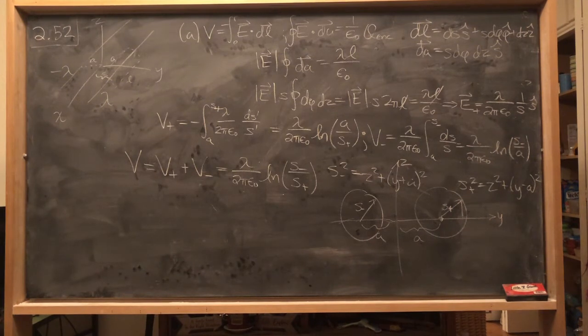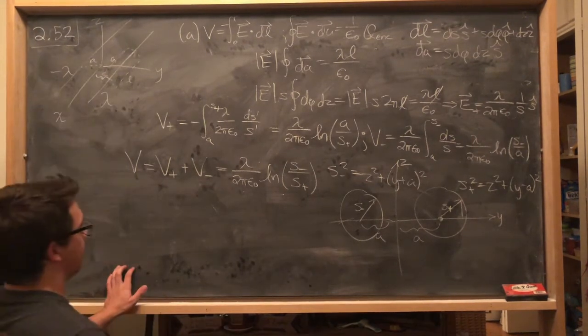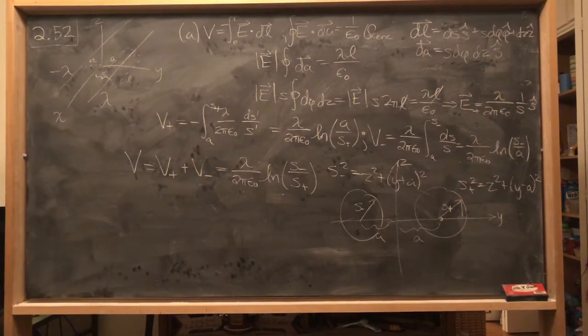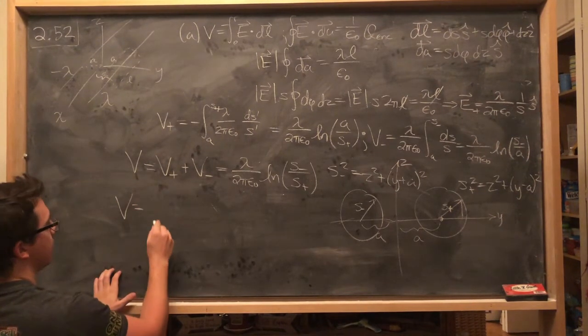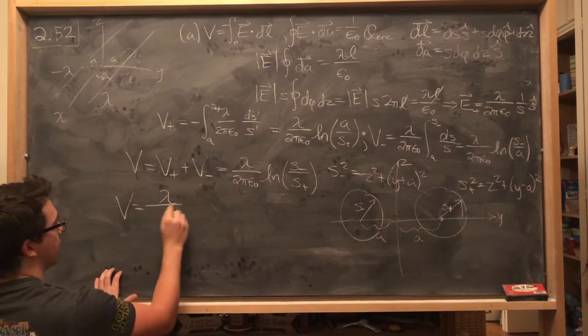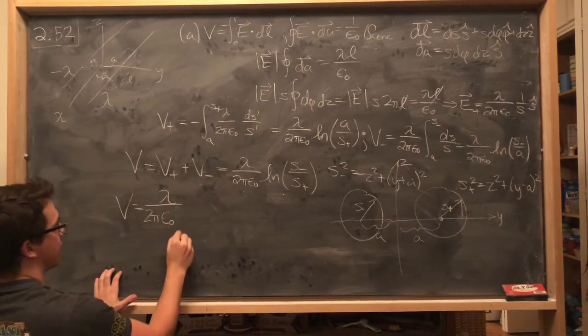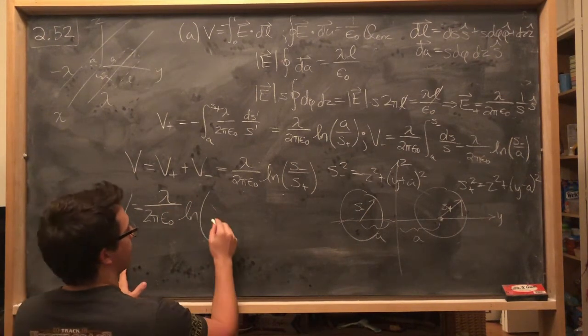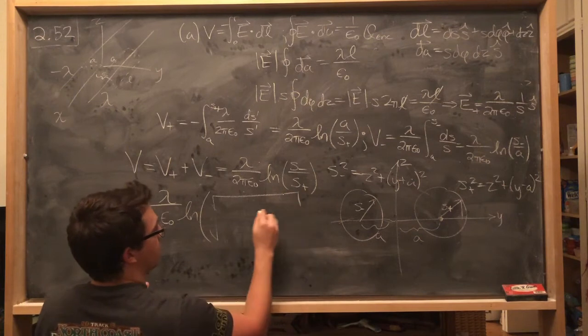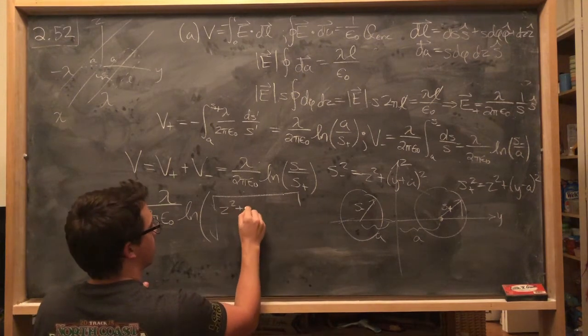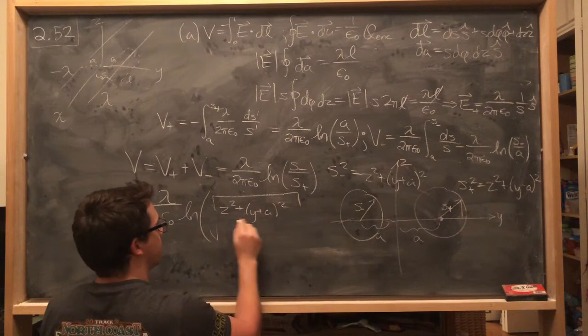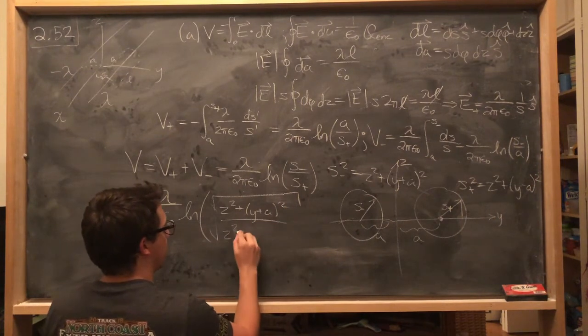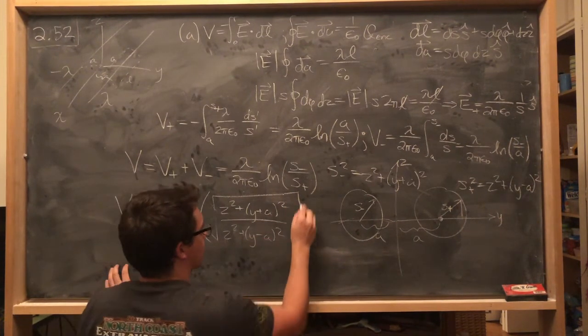And so then, finally, we would have V equals lambda over 2 pi epsilon naught natural log of square root z squared plus y plus a quantity squared over z squared plus quantity y minus a squared.